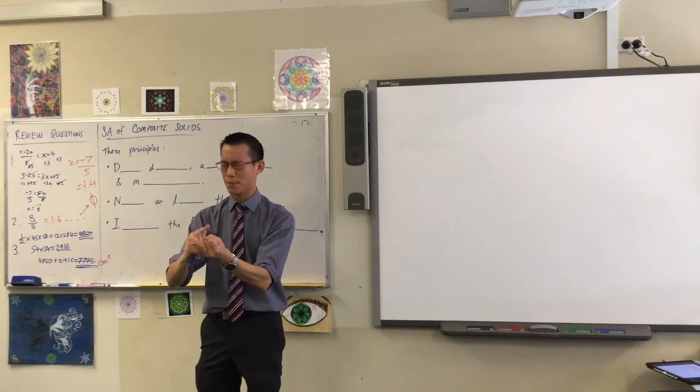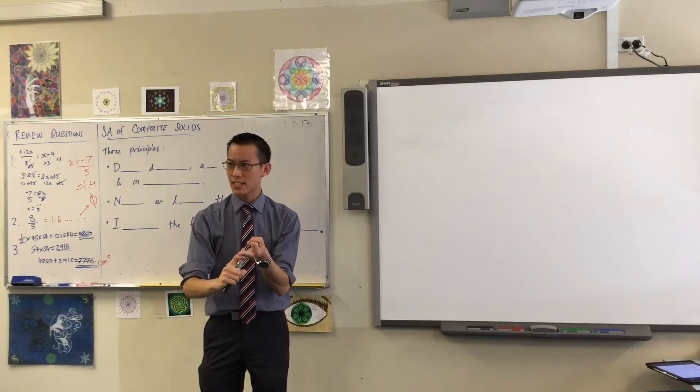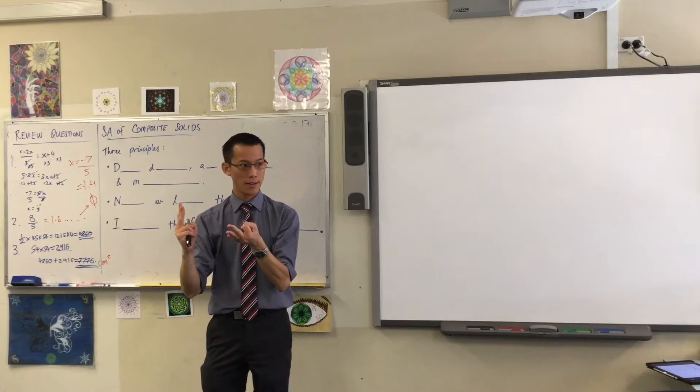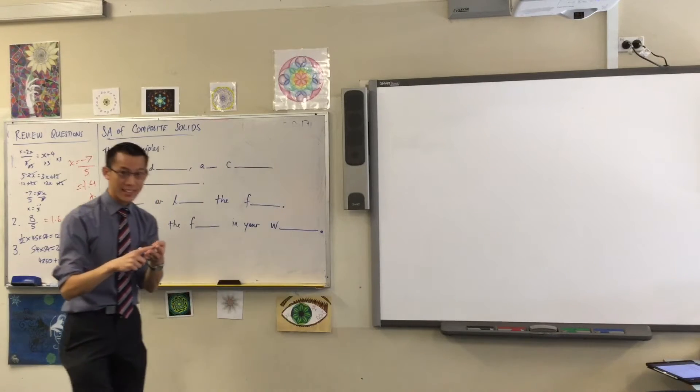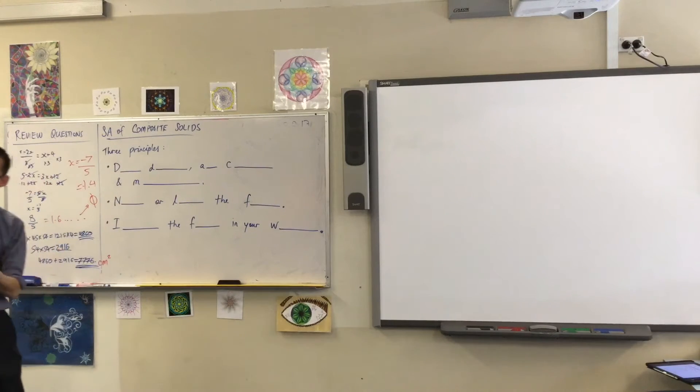We did prisms, we did pyramids. Yesterday we looked at two kinds of shapes. We looked at spheres and cones. I suppose you could think of a cone kind of like a special pyramid, right? That's where we left off.